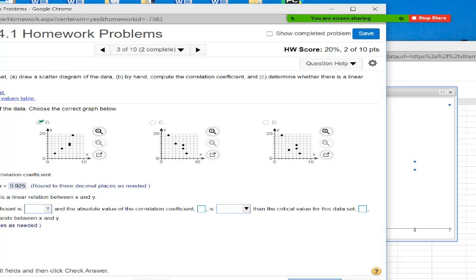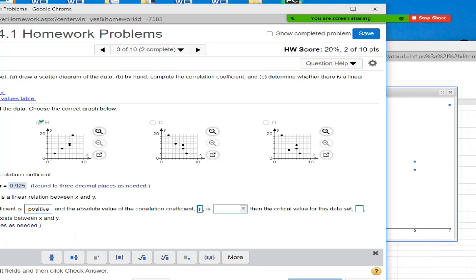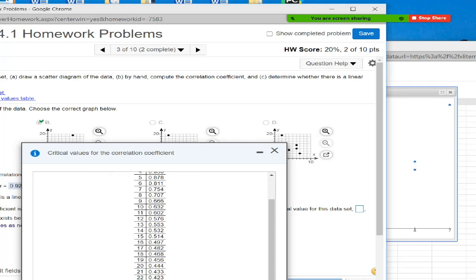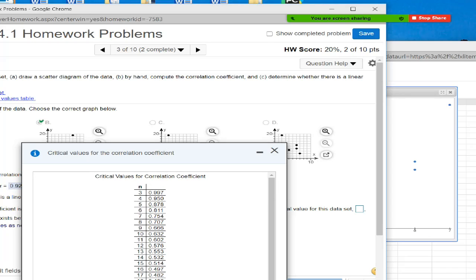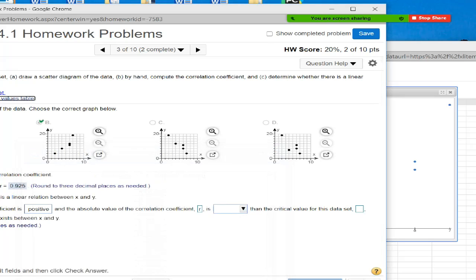And finally, the correlation coefficient is positive. And the absolute value of the correlation coefficient, I think they want R is, let's see, is it greater than, let's look at the critical values. So N is, we have one, two, three, four, five, five different data points. So for N is 5, 0.878 is our critical value. And therefore our R is greater than the critical value for this data set.